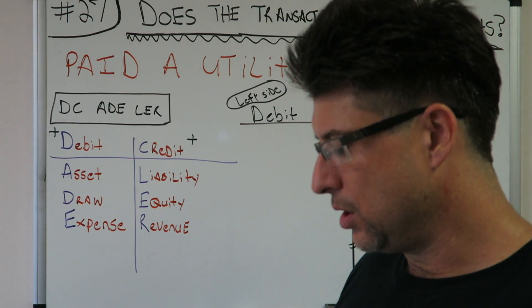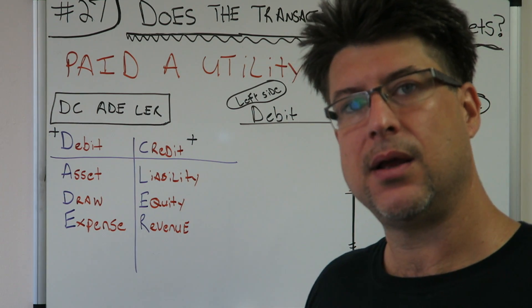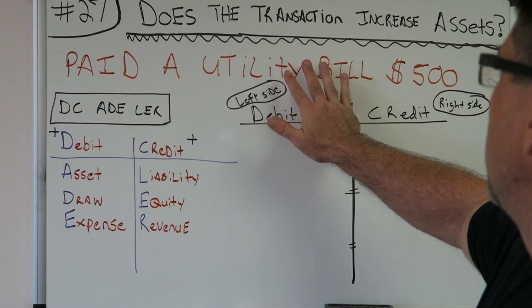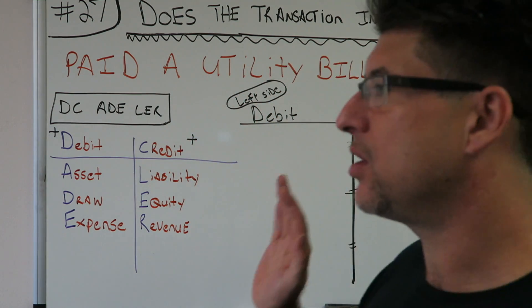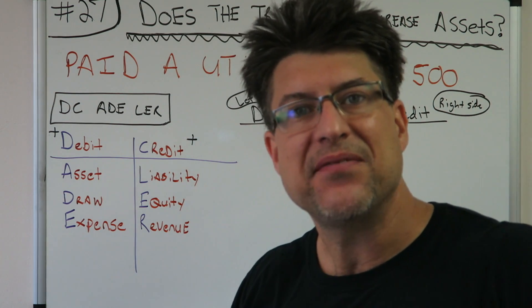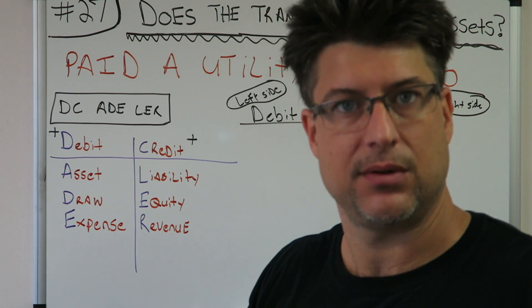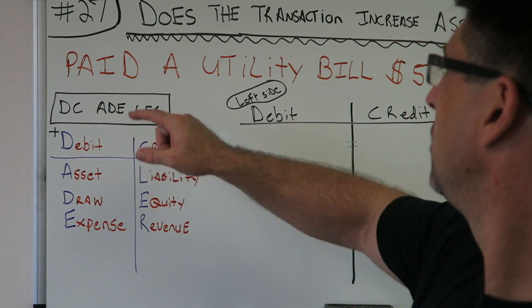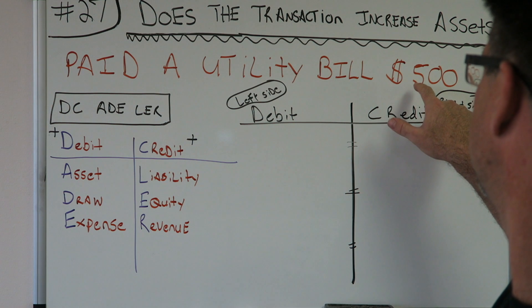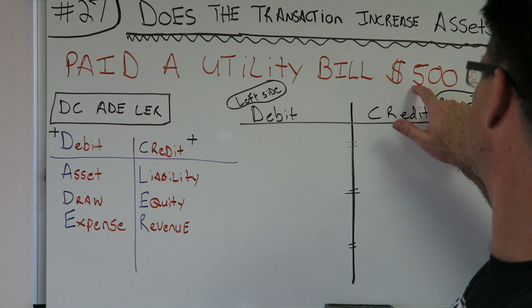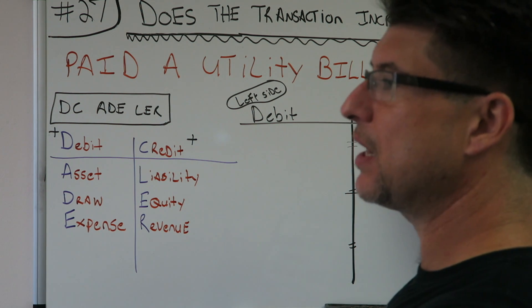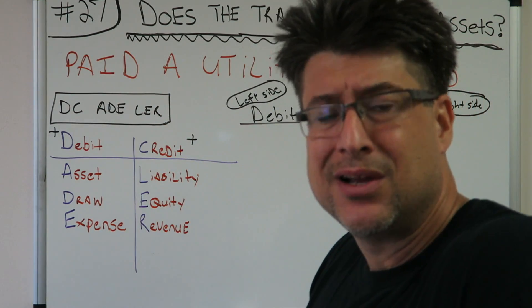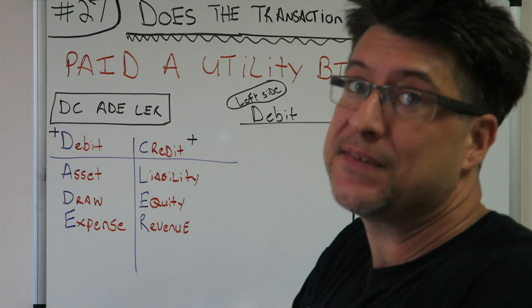Alright, let's think. Paid a bill $500. Do we have cash here — going in or out? First thing I like to do: do we have cash? Paid a utility bill $500. We've got $500. They don't say 'cash,' but 'paid' — so that's money. I've got $500 going out. It goes fast, doesn't it? A lot faster out than in.